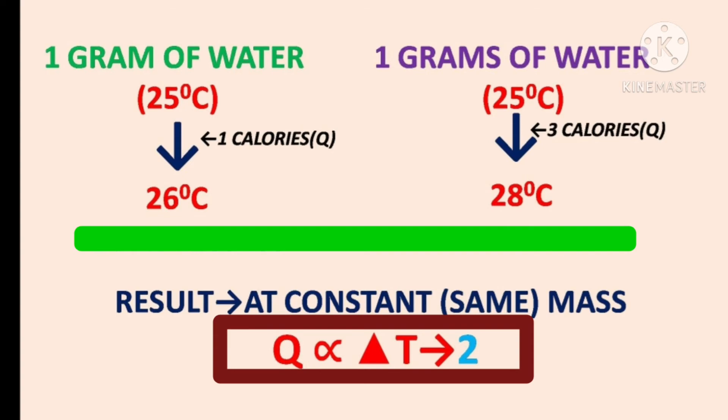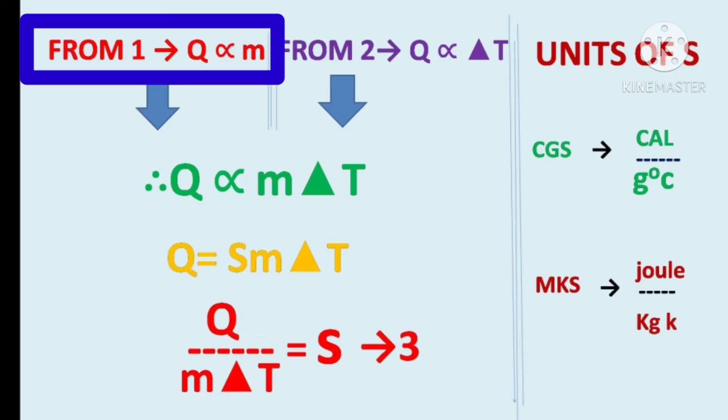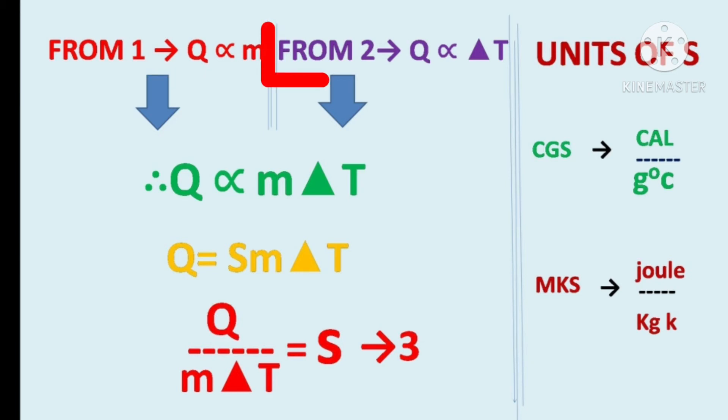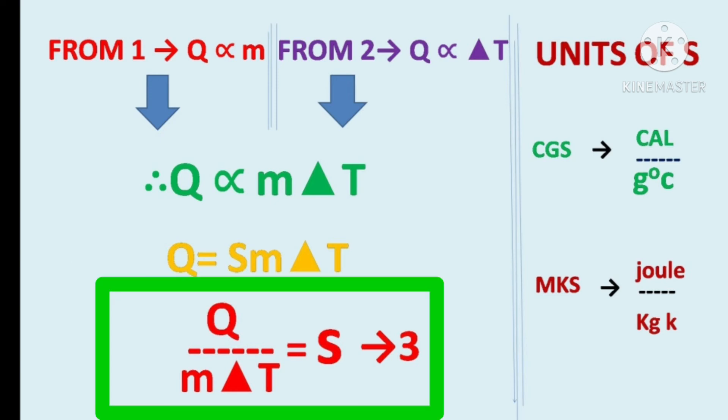From equation 1, Q is directly proportional to M. From equation 2, Q is directly proportional to Delta T. Then, Q is directly proportional to M Delta T. So, Q is equal to some constant into M Delta T. Take a constant S. This is specific heat.